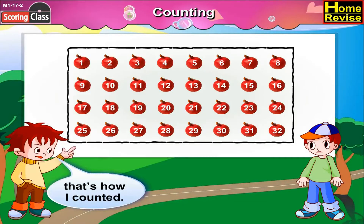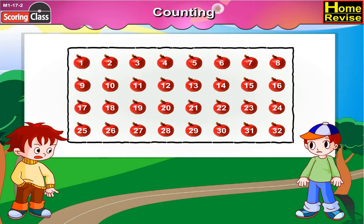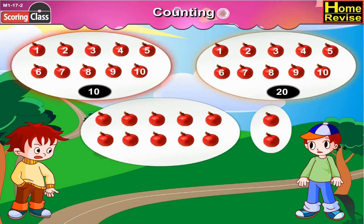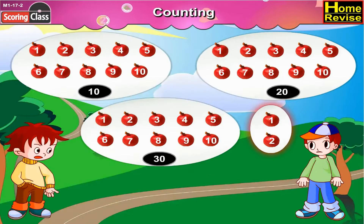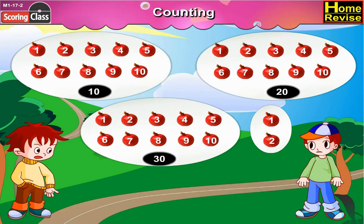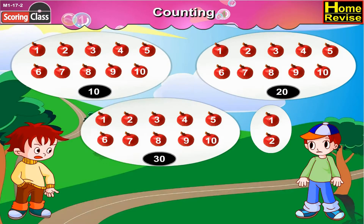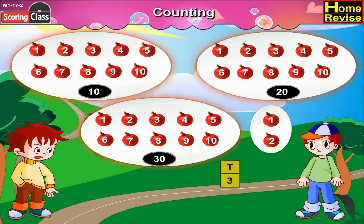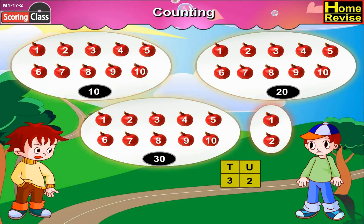That's how I counted. Now, let us see Javed's method. That's how I counted. Can you feel the difference between Aman's method and Javed's method? Aman counted them directly. Javed made groups of 10 pomegranates and counted them as 10, 20, 30 and added the remaining two. That makes it 32.